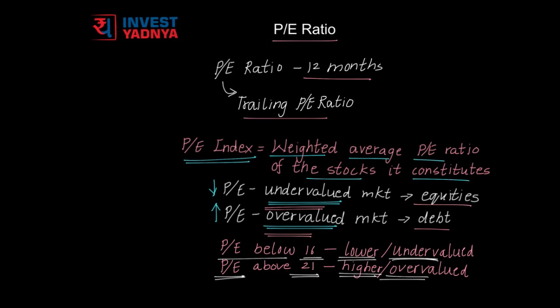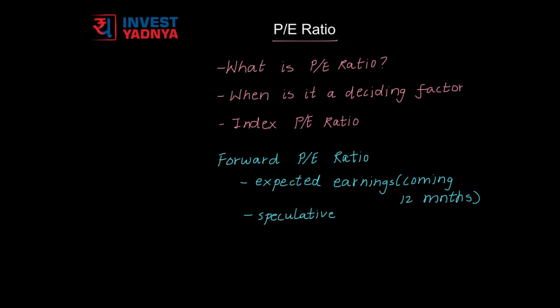P.E. Ratio should not be used as the sole criteria to buy stocks. If the P.E. Ratio of a stock has dipped, you need to find out why it has happened rather than simply believing it is a good time to buy. There is another term called forward P.E. Ratio, which is based on the expected earnings in the coming 12 months. The forward P.E. Ratio is based on analysis by research analysts, which can be speculative.